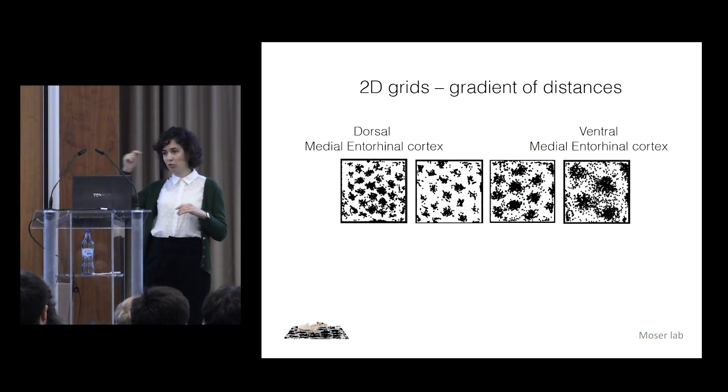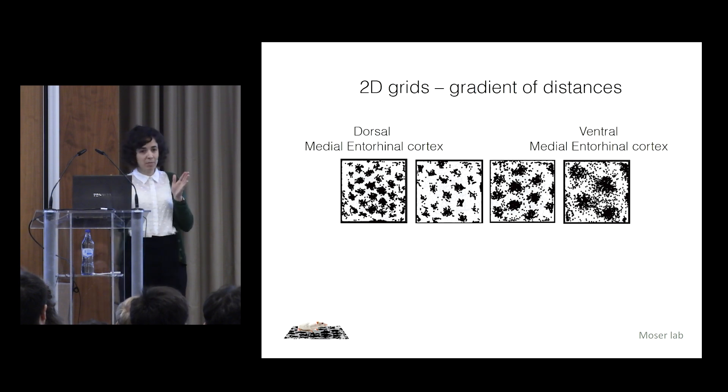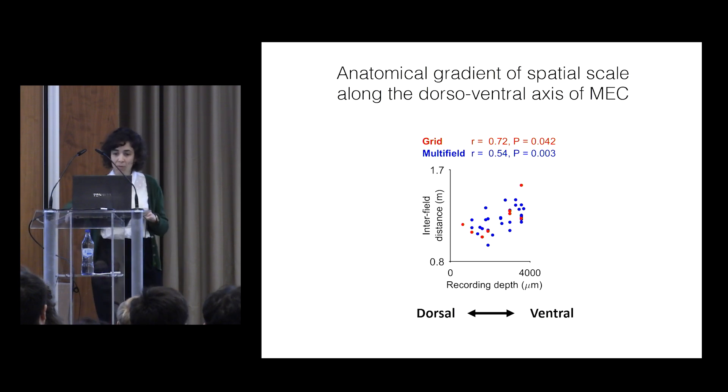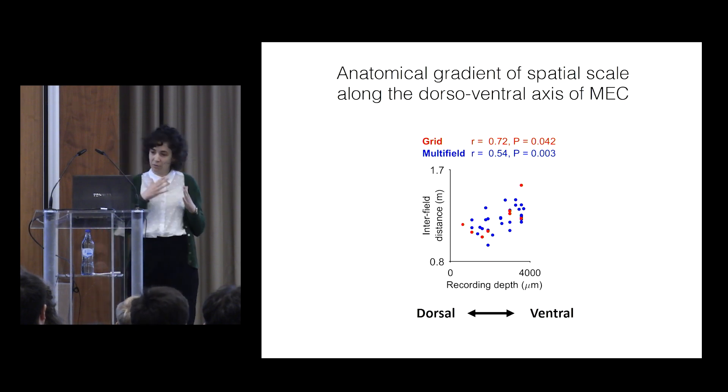the deeper you record from dorsal to ventral MEC, the distance between neighboring fields increases. And so we see the same thing in our data. When we record from dorsal to ventral MEC, the inter-field distances increase, and we see that for both the grid cells and the rest of the multi-field cells. So this works similarly to rodent.